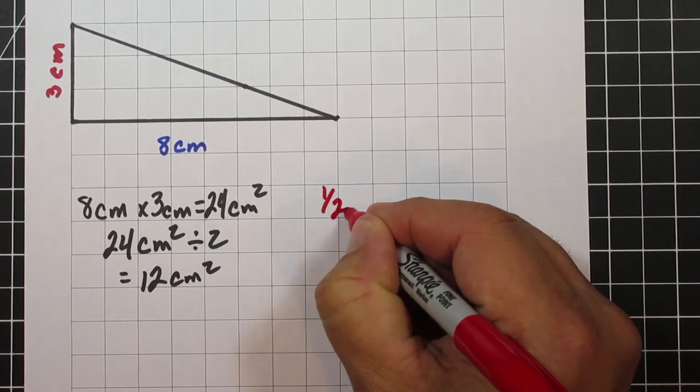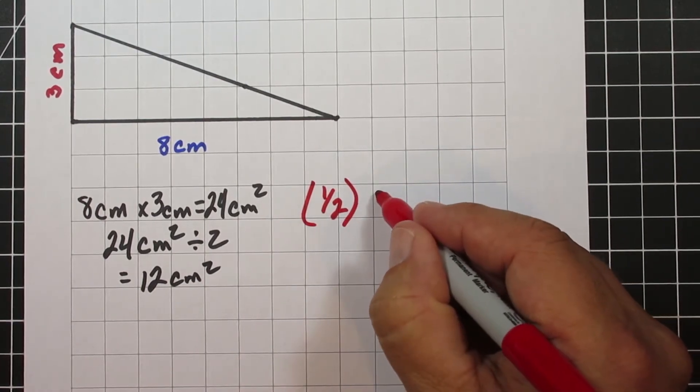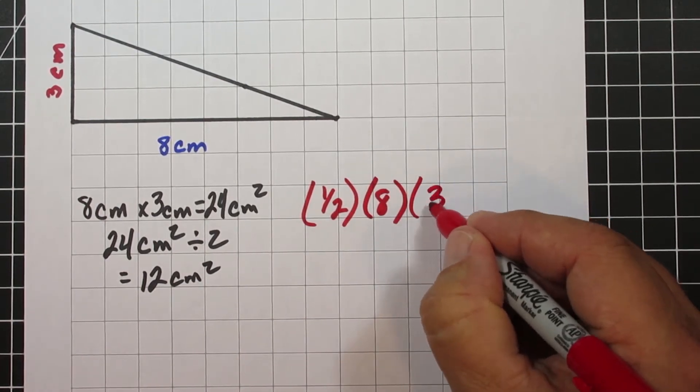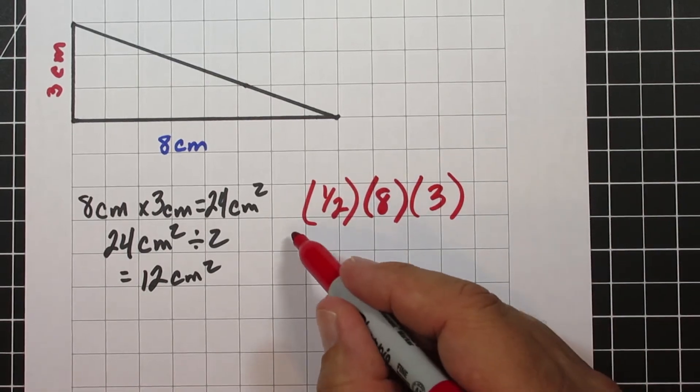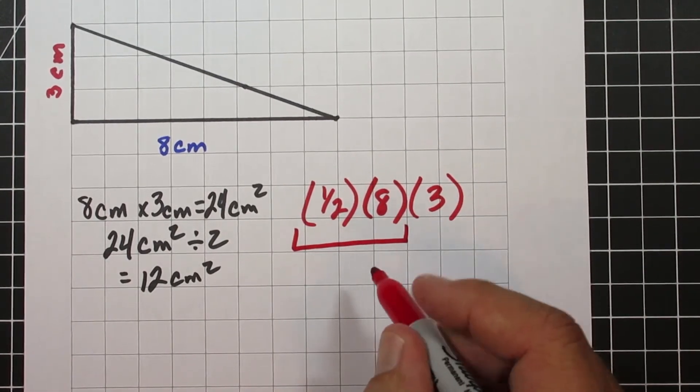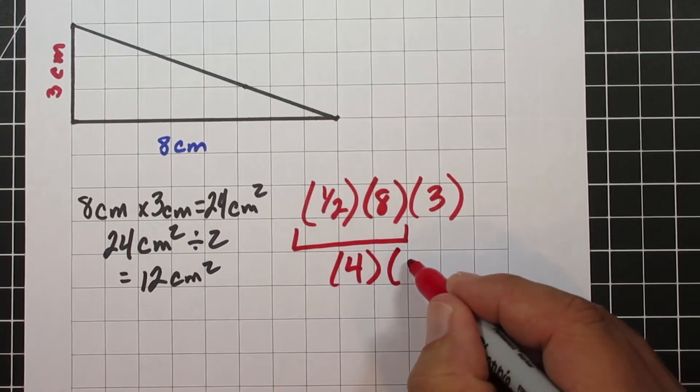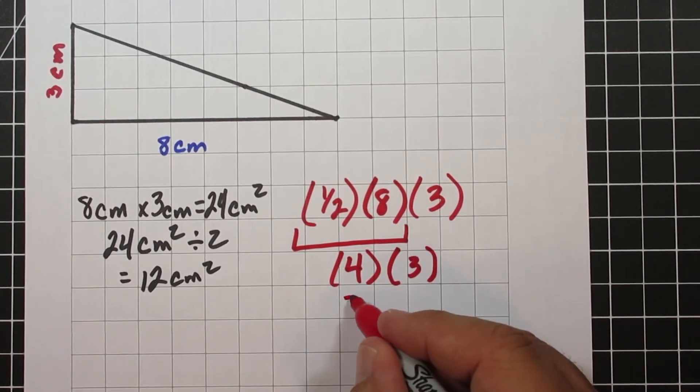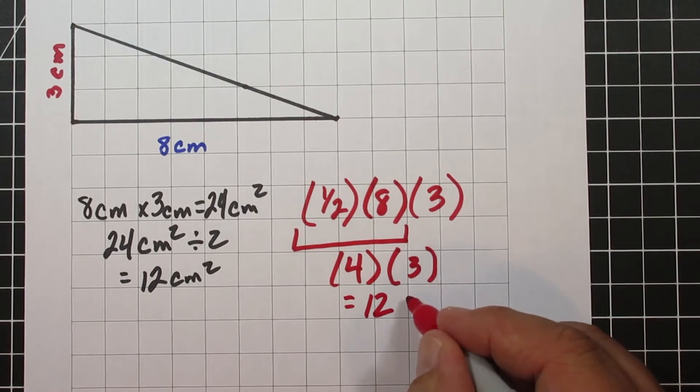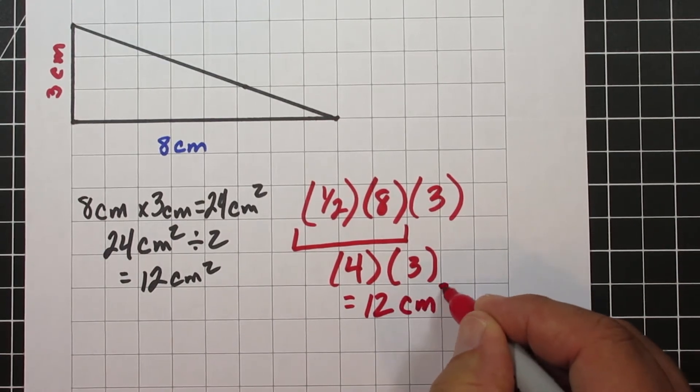Now, when we go to do the next one, we'll go 1 half times the base, which is 8, times the height, which is 3. We'll multiply the 1 half times the base, and that's going to give us 4. 4 times 3 is 12, so the area is 12 centimeters squared. So again, both of them work.